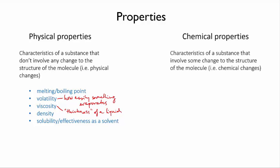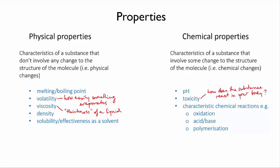In contrast, chemical properties are characteristics that have to do with how the substance reacts with other substances. These are things such as pH, toxicity, how the substance reacts in your body, and characteristic chemical reactions of all kinds.